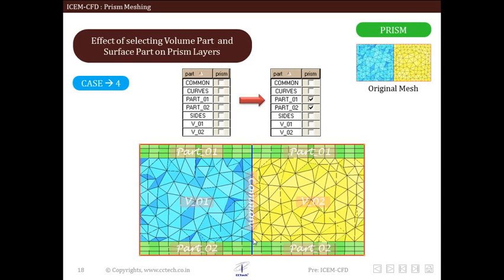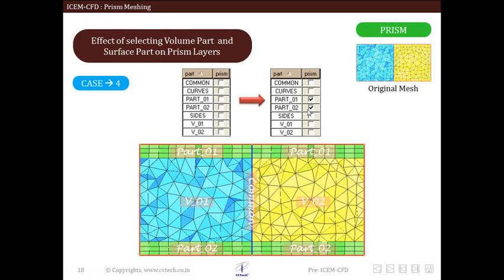In the next case, we select Part 01 and Part 02 for prism creation with no volume part selected. We observe that the prism layer is created on both surfaces, Part 01 and Part 02. Since no volume part is selected, which is the same as selecting all volume parts, we have through-and-through prism layers for both volumes.